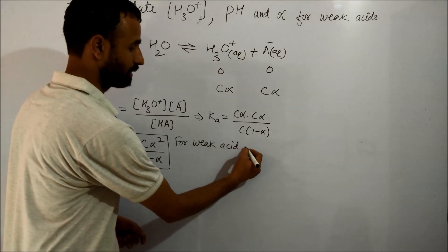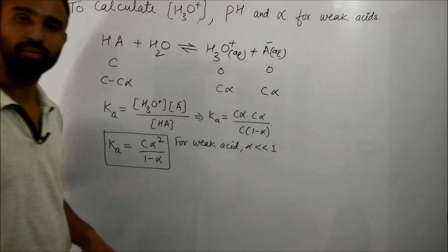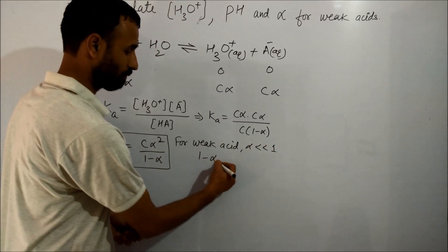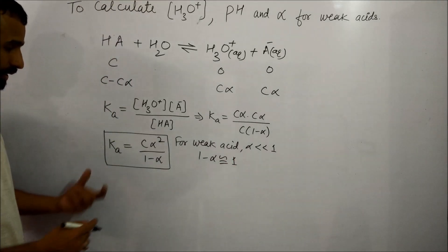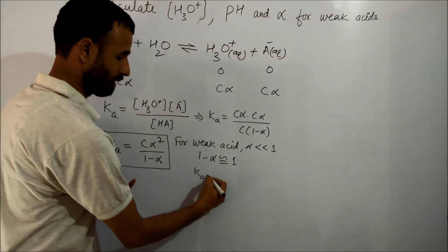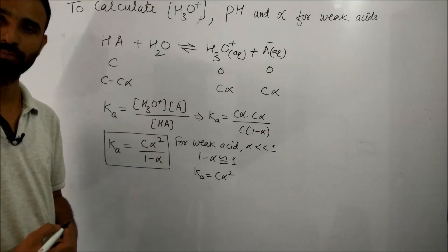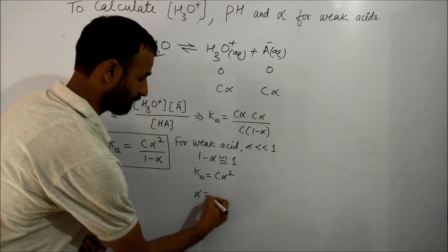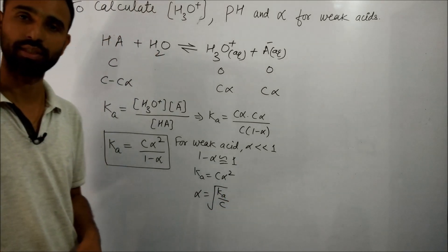For weak acids, alpha is very very less than 1. So 1 minus alpha is approximately 1. Therefore, Ka is equal to Cα². Alpha is equal to the square root of Ka over C.